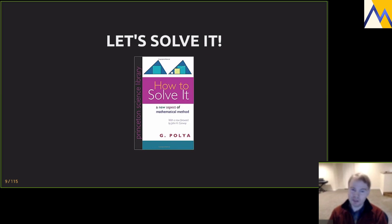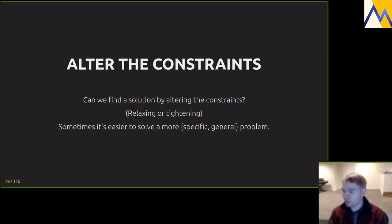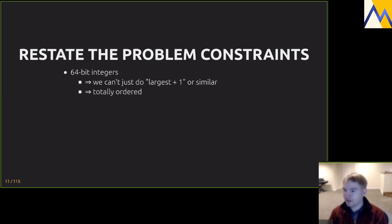Whenever I sit down to solve something cold, I think back to this book — from 1945, it's about solving problems and it's really good. One useful technique it describes: think about altering the constraints. If we can't immediately see how to solve a problem, try to solve a related problem, and once we do that, maybe we'll see how to add or remove constraints to reach back to the original problem.